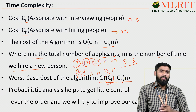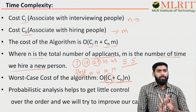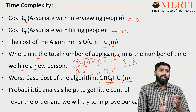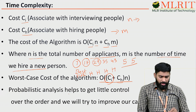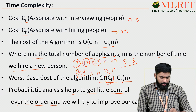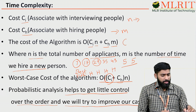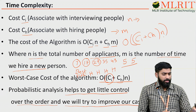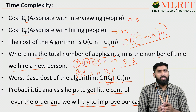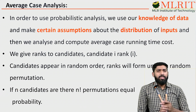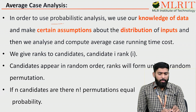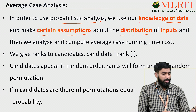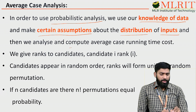By using probabilistic analysis, we are going to minimize the time complexity — that is our main goal of probabilistic analysis. Probabilistic analysis means we consider probabilities when calculating the running time of an algorithm. Probabilistic analysis helps to get some control over the ordering and tries to improve our case. The worst case time complexity of this algorithm is CI + CH·N. So now we are going to minimize that time complexity through average case analysis. In order to use probabilistic analysis, we use our knowledge of data, make certain assumptions about the distribution of inputs, and then analyze and compute the average case running time cost.